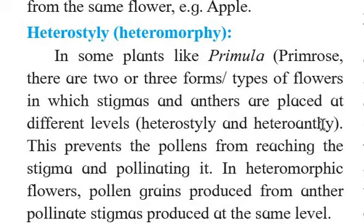In heterostyly, the style is placed at different levels inside the flower. The flower is bisexual, but the style length is very long, while the stamens are very short. The stigma is placed at a very upper level, due to which the pollen grain released from the anther is not deposited on the stigma of the same flower. In hetero-anthery, the stamen is very long and the anther is placed quite distantly from the stigma, preventing same-flower pollen deposition.